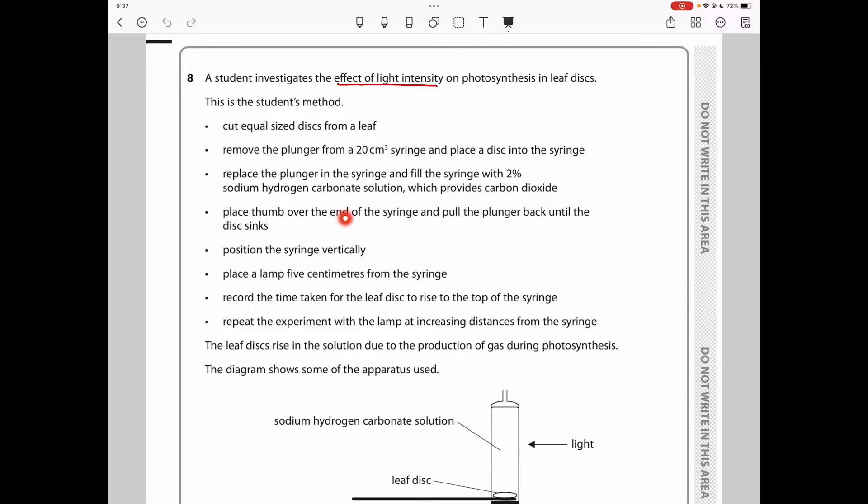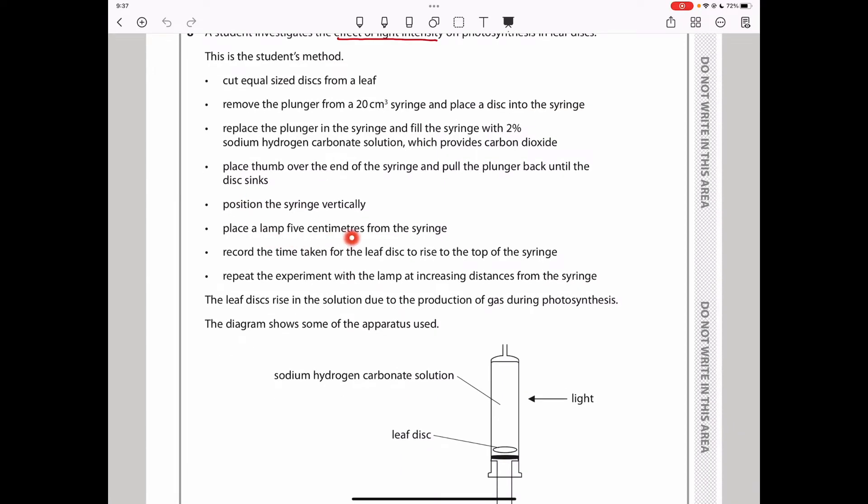Replace the plunger in the syringe and fill the syringe with 2% sodium-hydrogen carbonate solution, which provides carbon dioxide. If you're doing an experiment in solution, sometimes you cannot provide gaseous CO2, so the carbon dioxide is going to be provided as sodium-hydrogen carbonate solution. Place thumb over the end of the syringe and pull the plunger back until the disc sinks. Position the syringe vertically, place a lamp 5 centimeters from the syringe.